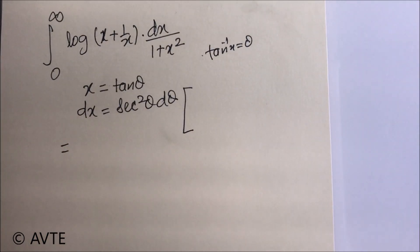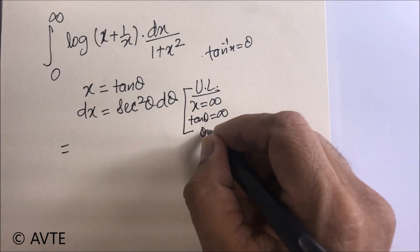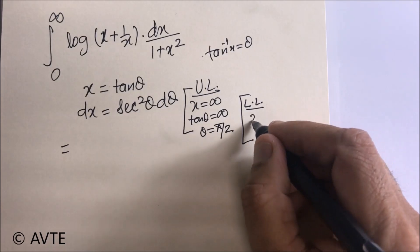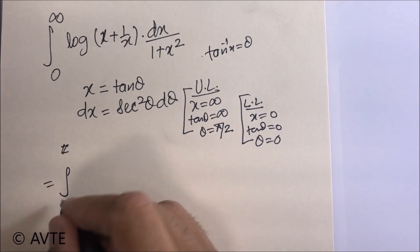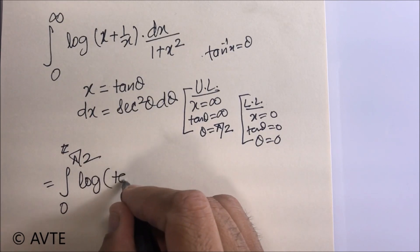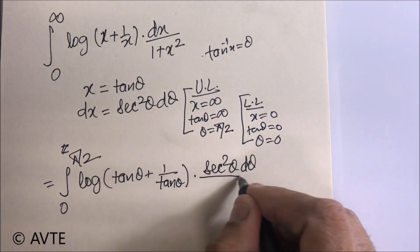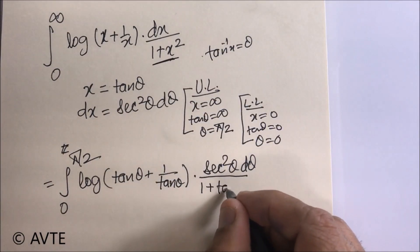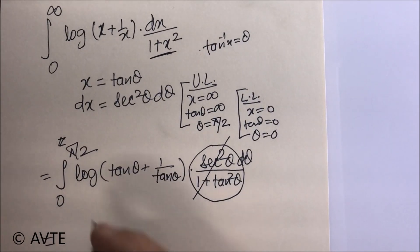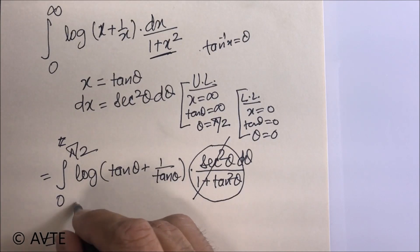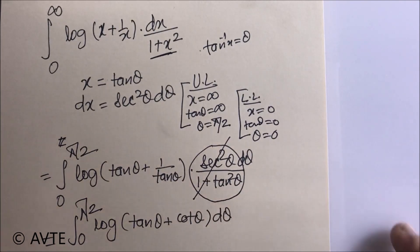We also change the limits. The upper limit: x = ∞ means tan θ = ∞, so θ = π/2. The lower limit: x = 0 gives θ = 0. The integral becomes ∫₀^(π/2) log(tan θ + 1/tan θ) · sec²θ dθ divided by (1 + tan²θ), which is also sec²θ. The sec²θ cancels, leaving ∫₀^(π/2) log(tan θ + cot θ) dθ.